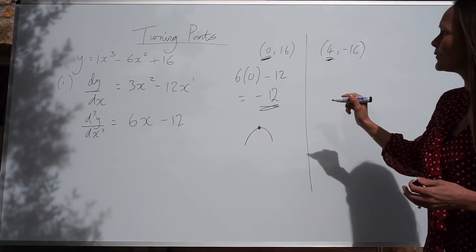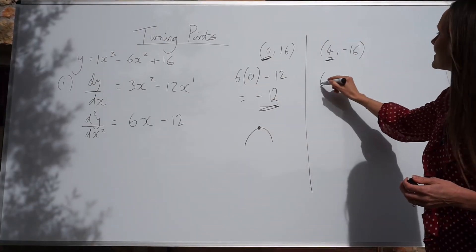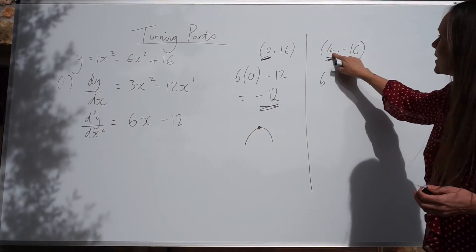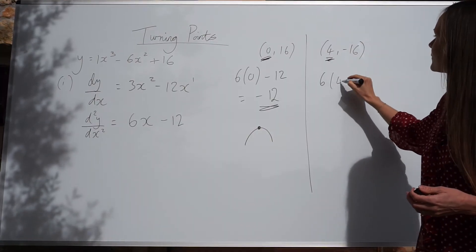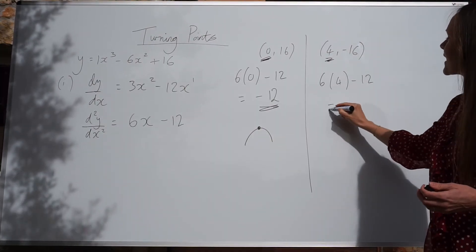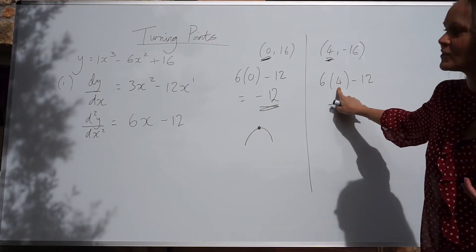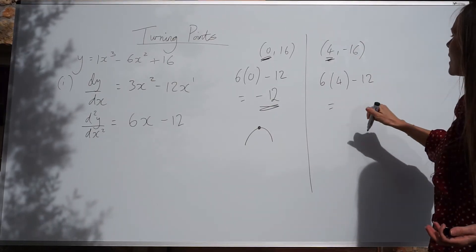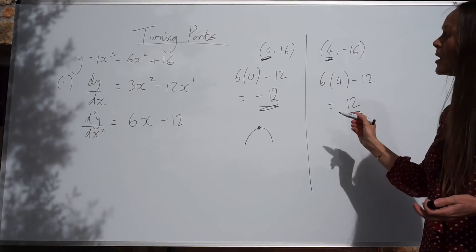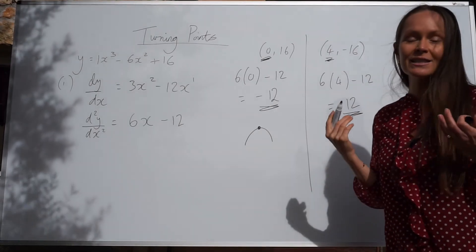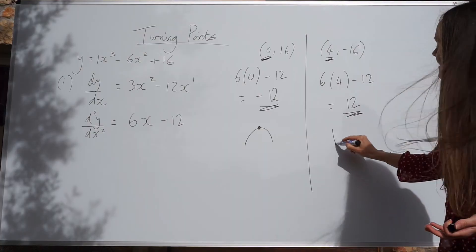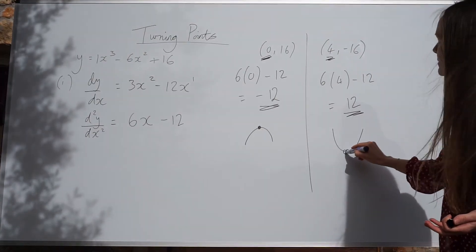Now let's do the same thing for the other x value. So instead of doing 6 times 0 minus 12, we're doing 6 times 4. Because the x value is 4. And if we work that out, 6 multiplied by 4 is 24. Take away 12 is 12. So this time, it's a positive number. And if it's a positive number, it means that it's a minimum point.